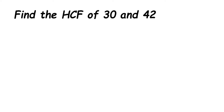Here's a question on HCF: find the HCF of 30 and 42. HCF is nothing but Highest Common Factor, where you have to find the common factor which is highest and can divide both 30 and 42. There are two methods — the division method and the prime factorization method. In this video I'm going to show you both.